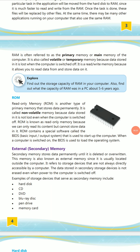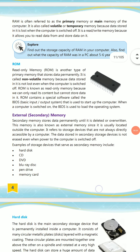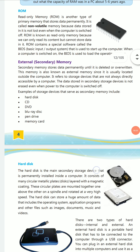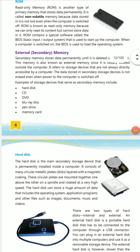ROM contains special software called BIOS — Basic Input Output System — which is used to start up the computer when it is switched on. BIOS is also used to load the operating system. The data in ROM is permanent and is installed by the computer manufacturer during development.